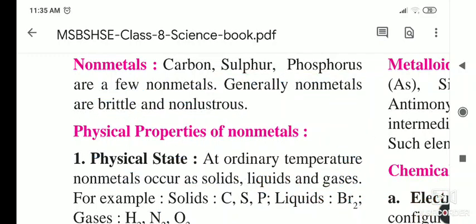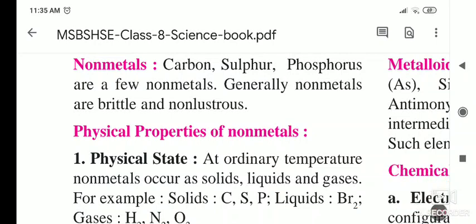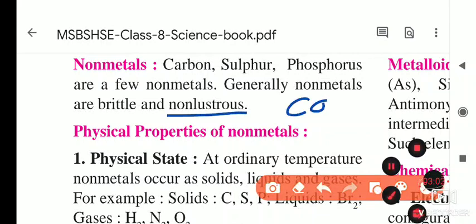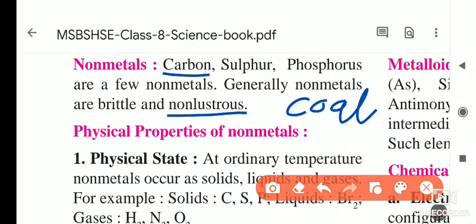Another example of brittleness: a saucer or cup when it falls it breaks easily. Non-metals are non-lustrous, meaning they are not shining. For example, coal (carbon) is black, sulfur powder is yellow, and phosphorus — from which match sticks are made — is reddish in color.